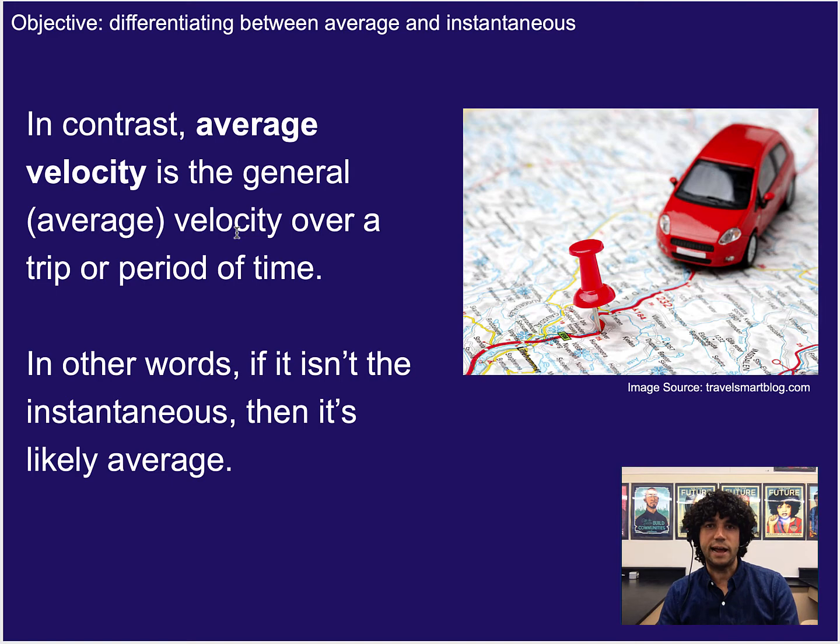In contrast, average is the measurement over a period of time or sometimes a period of distance or some sort of over some other area, basically. So often it will be over distance or time. So what was your average velocity for the two hour trip or what was your average velocity for the 100 mile trip, depending on how you want to describe it.